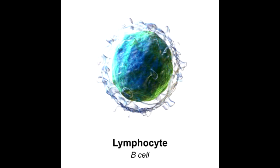One additional thing to note about B lymphocytes is that they can function as an antigen presenting cell via MHC2 receptor. B lymphocytes can also be affected by Epstein-Barr virus, which would lead to mononucleosis.